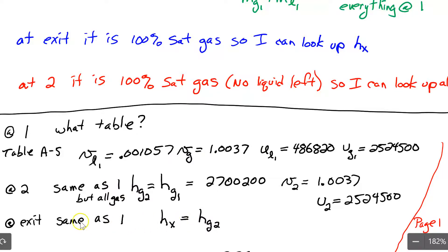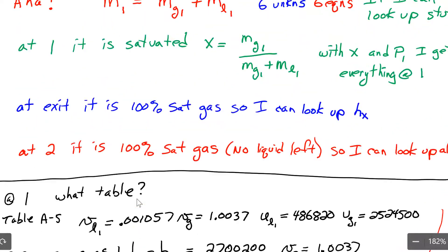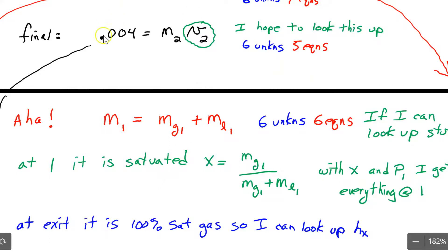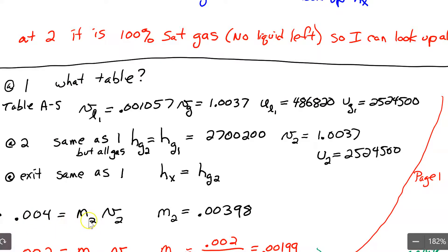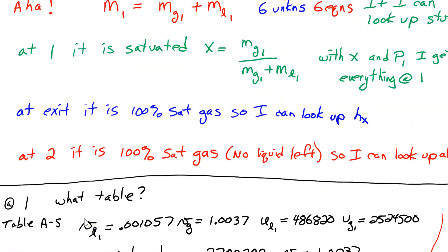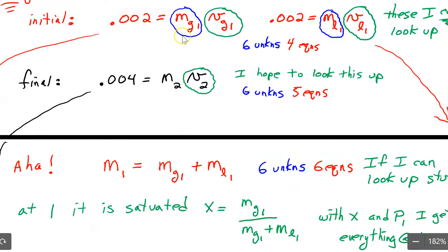Now try to solve the equations. I'm looking for easy ways to solve without doing them all simultaneously. The first one: I can get mass 2 because it's the only unknown in the volume equation at state two — V2 divided by the specific volume gives mass 2. Now that I have mass 2, I look at the two initial volume equations. With the two green specific volumes, I can solve for the two blue unknowns — the mass of gas at state one and the mass of liquid at state one.